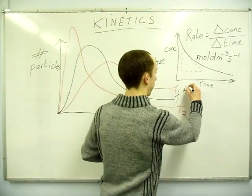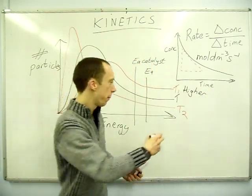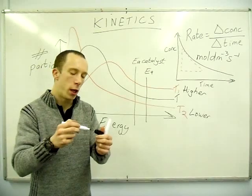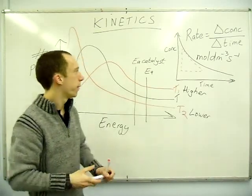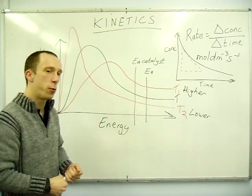So T1, higher temperature, and T2, a lower temperature. That is the Maxwell Boltzmann distribution. That's all you will need to be able to do with it. And that is all for kinetics.